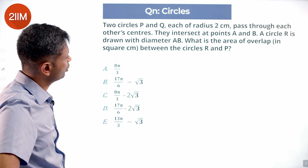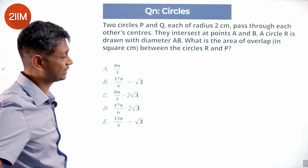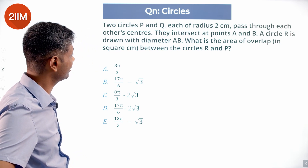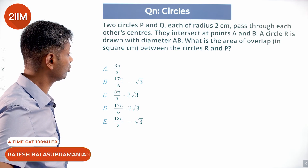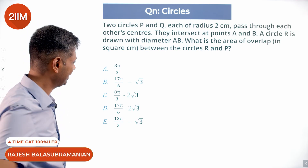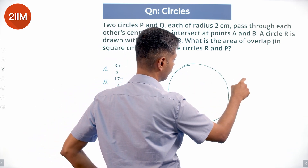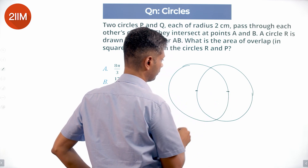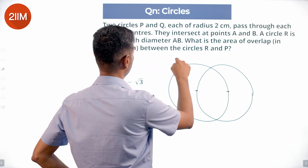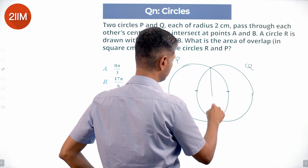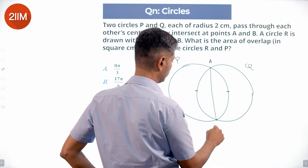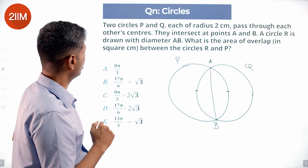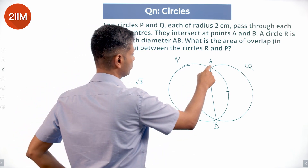Two circles P and Q, each of radius two centimeters, pass through each other's centers. They intersect at points A and B. A circle R is drawn with diameter AB. We draw circle R like this, passing through the two intersection points.